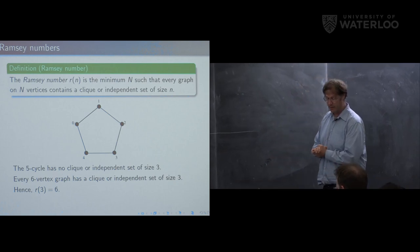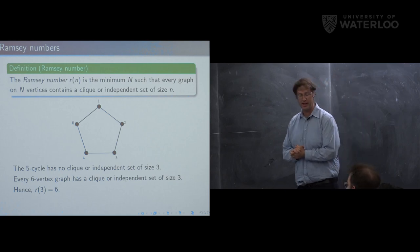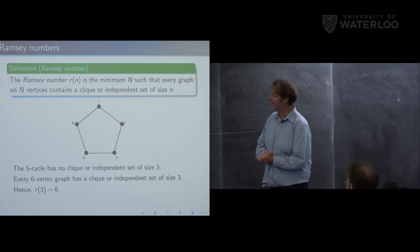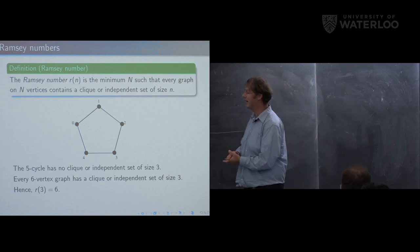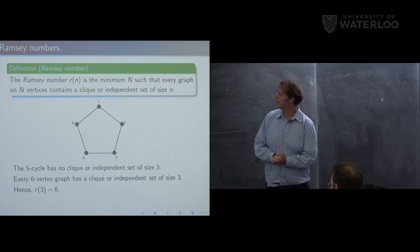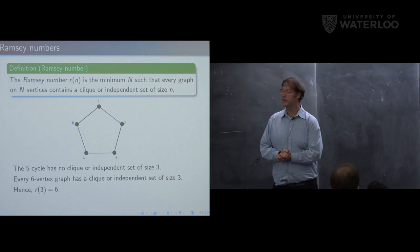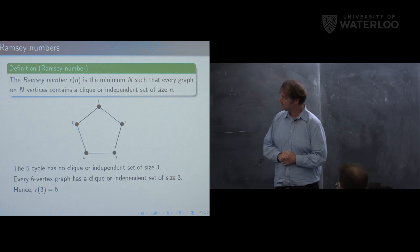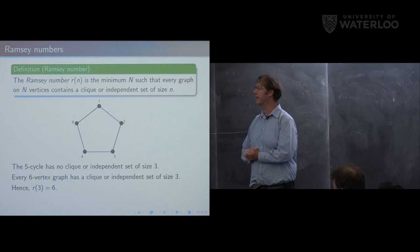To quantify what's going on in Ramsey's theorem, we look at the Ramsey number r(n), which is the minimum N such that every graph on N vertices contains a clique or independent set of size n. The five cycle is an example of a graph on five vertices with no clique or independent set of size three. Any graph with six vertices will necessarily have a clique or independent set of size three, so the Ramsey number r(3) = 6.